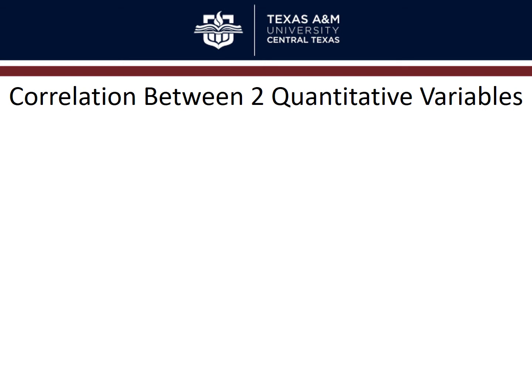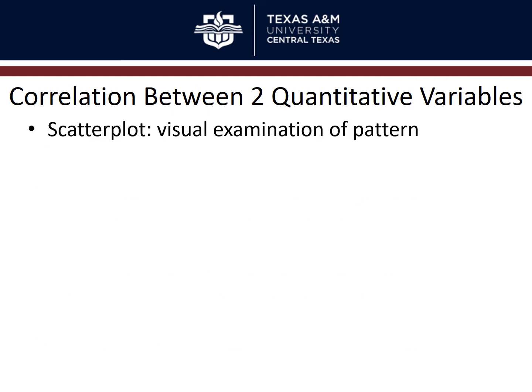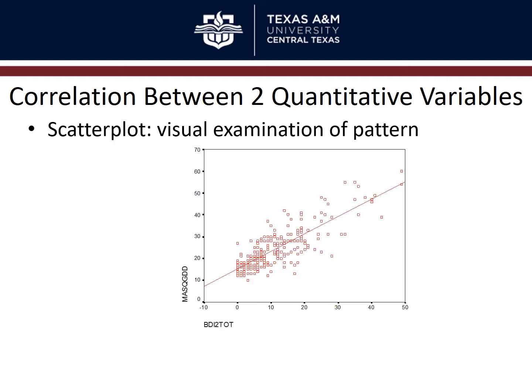When looking at the correlation between two quantitative variables, you typically start by looking at the scatter plot, which allows for a visual examination of the pattern of association. The predictor variable goes along the horizontal x-axis and the criterion outcome variable along the vertical y-axis. Every data point on the scatter plot represents one person, showing where they are on variable A and variable B — the intersection of those two variables.